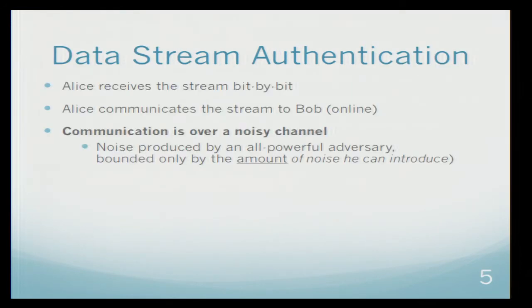Our problem is the following. Alice learns some stream in an online manner, bit by bit, one bit at a time, and she wants to communicate this bit over to Bob. However the communication channel has some noise. We assume we have some adversary which is all powerful but is limited only by the amount of noise that this adversary can make.